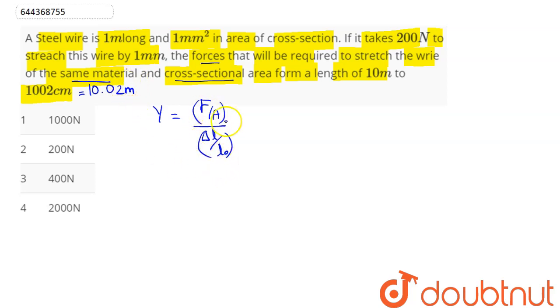Now we have our relation: F is equal to Young's modulus into area into delta L divided by L₀. Now Y and A remain the same.